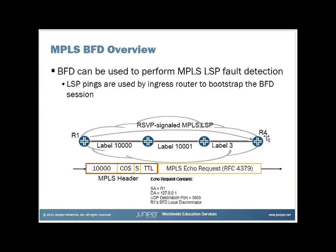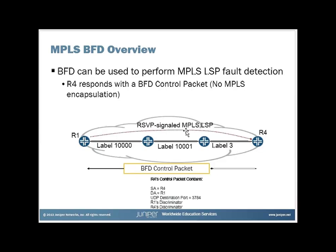When the packet gets to R4, it won't have any label information because of label 3. It is the local discriminator that allows R4 to identify which particular LSP this is for. R4 then responds with a BFD control packet in the reverse direction — with no MPLS encapsulation. It has a source address of R4, a destination address of R1, UDP port 3784, and contains both R1 and R4's discriminator for this BFD session.